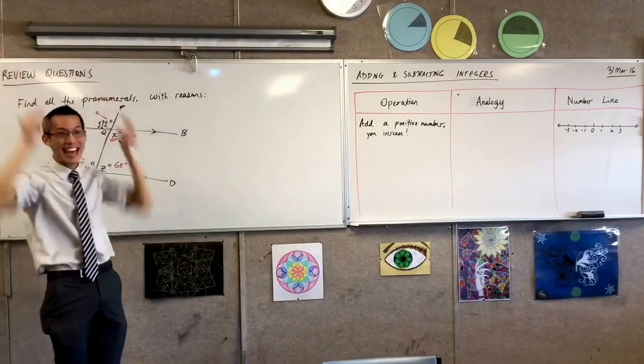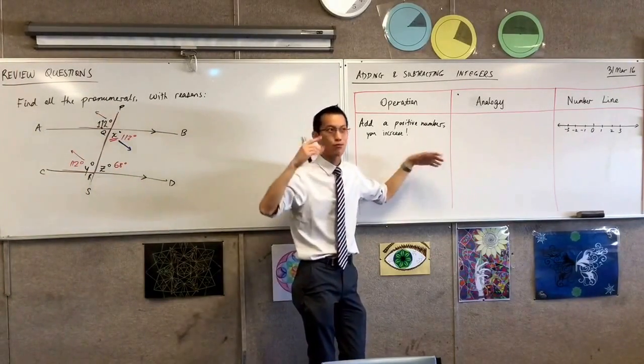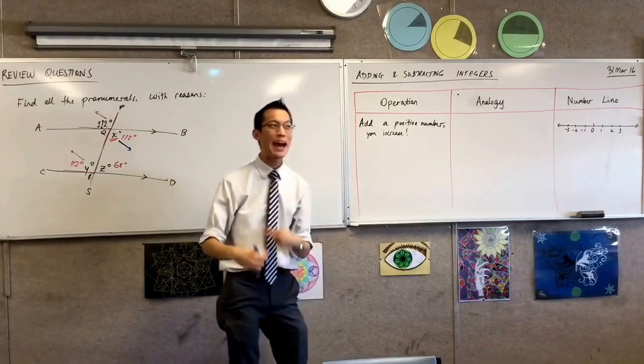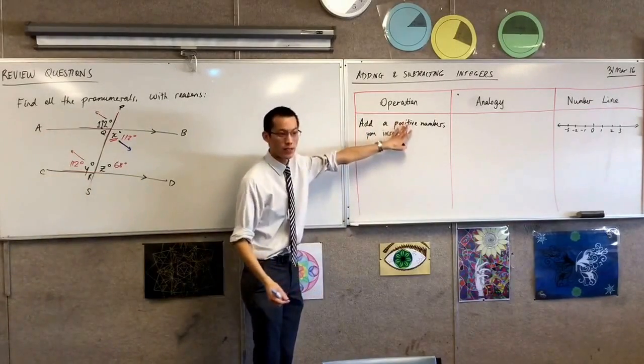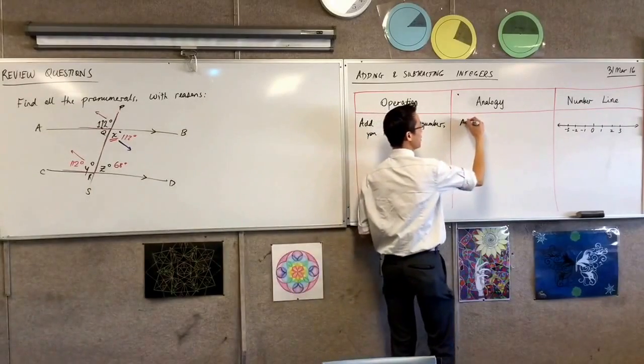Yeah, very good. He adds all of these balloons, and that's why he goes up. Roll credits. So therefore, my analogy for adding a positive number, which leads to increase, is if you add balloons to something.